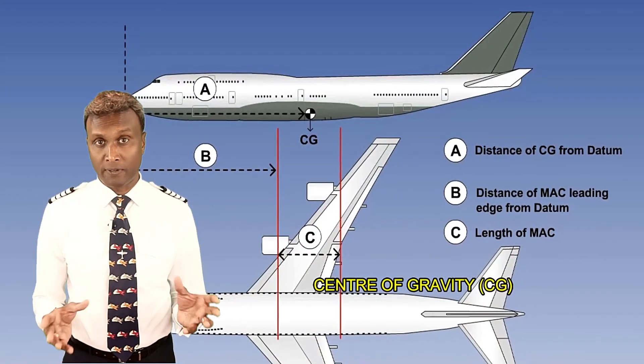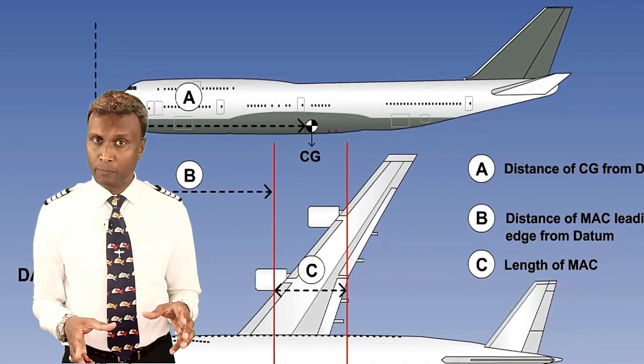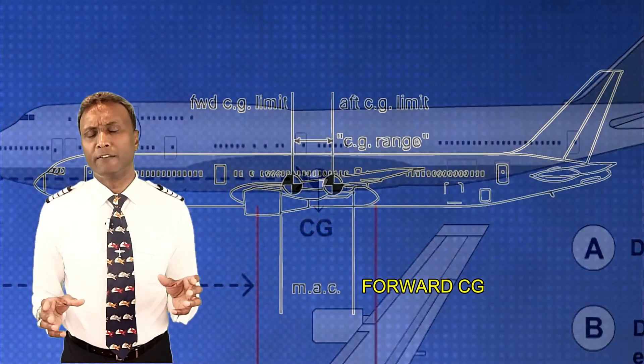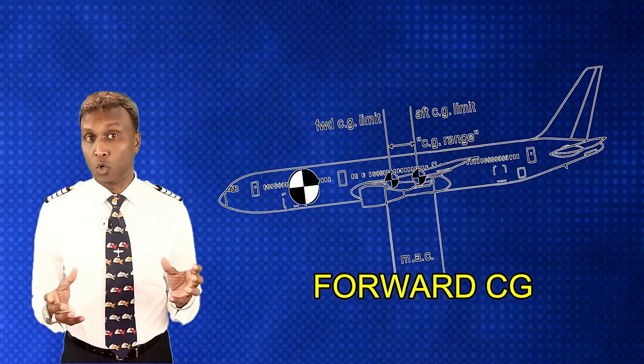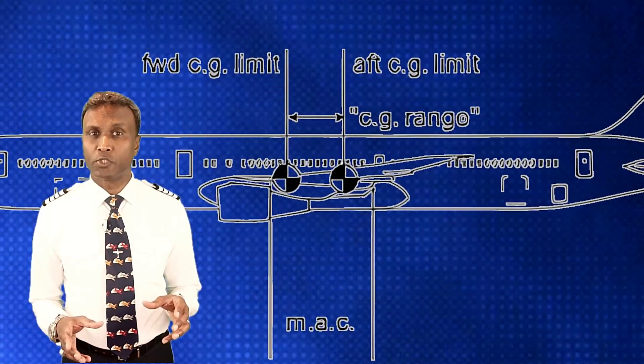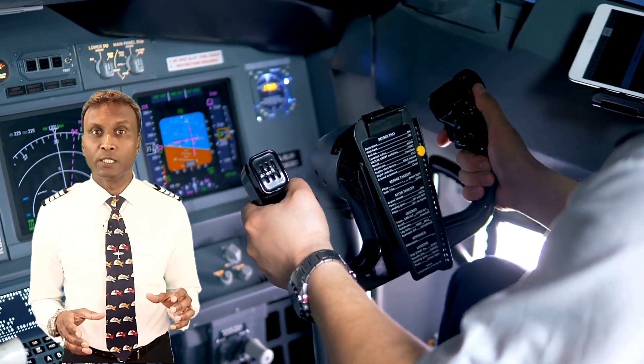Controllability in an aircraft is significantly influenced by weight distribution and the position of the center of gravity (CG). When the CG is properly positioned within the aircraft's designated limits, it ensures balanced control and stability. If the CG is too far forward, the aircraft may become nose-heavy, which can improve rudder and elevator effectiveness but make the aircraft more stable and less responsive to maneuvering. Conversely, if the CG is too far aft, the aircraft can become tail-heavy, making it overly sensitive to control inputs and more difficult to manage, especially during takeoff and landing. Proper weight distribution ensures the aircraft responds predictably to pilot inputs.